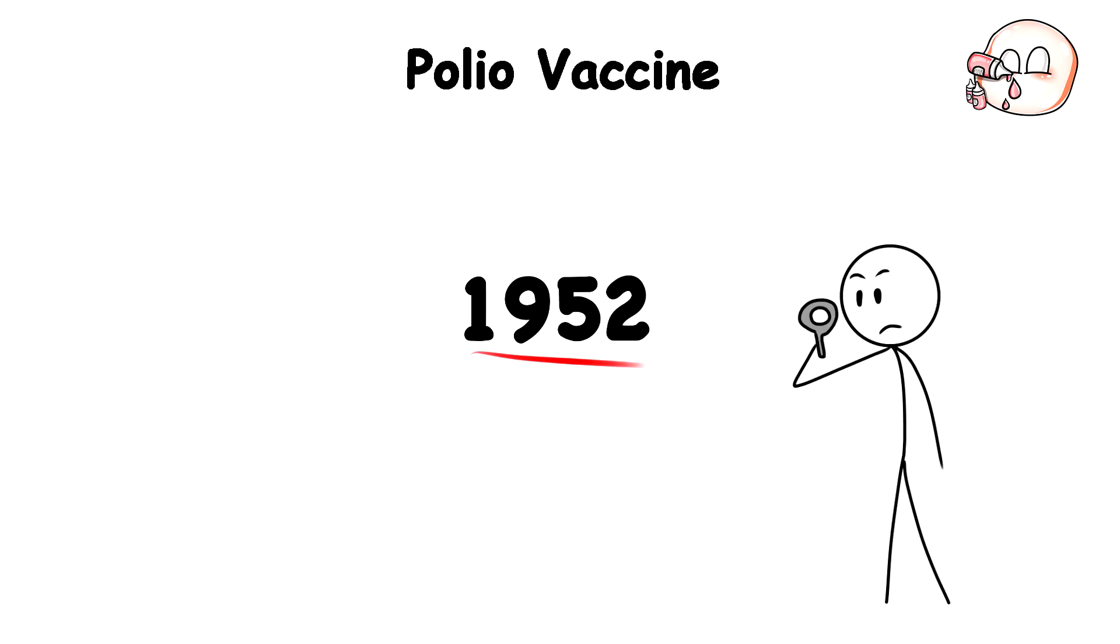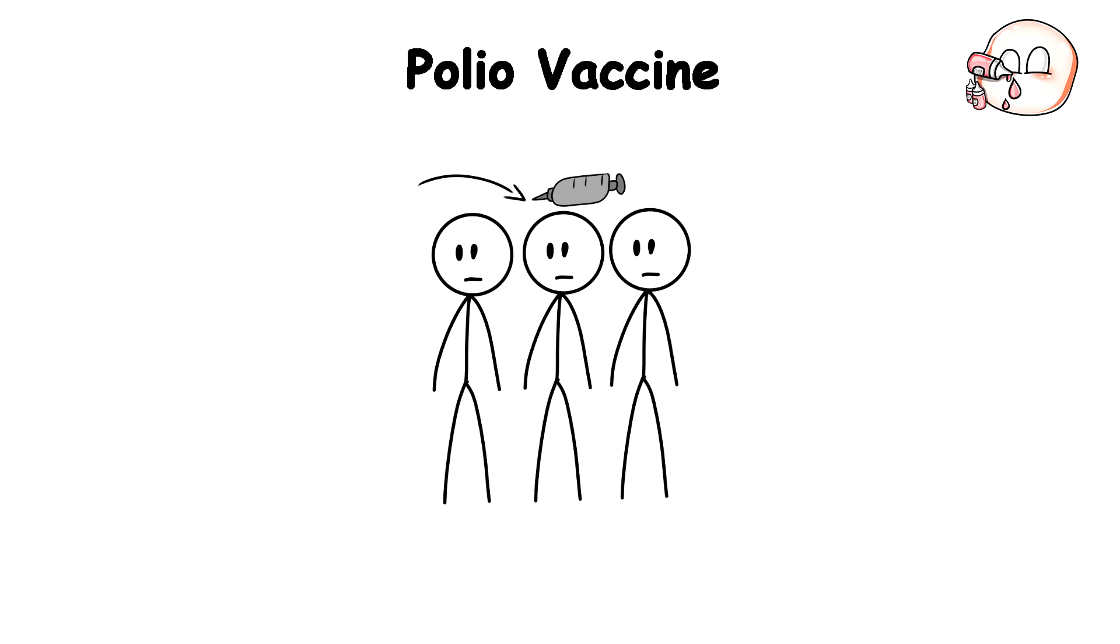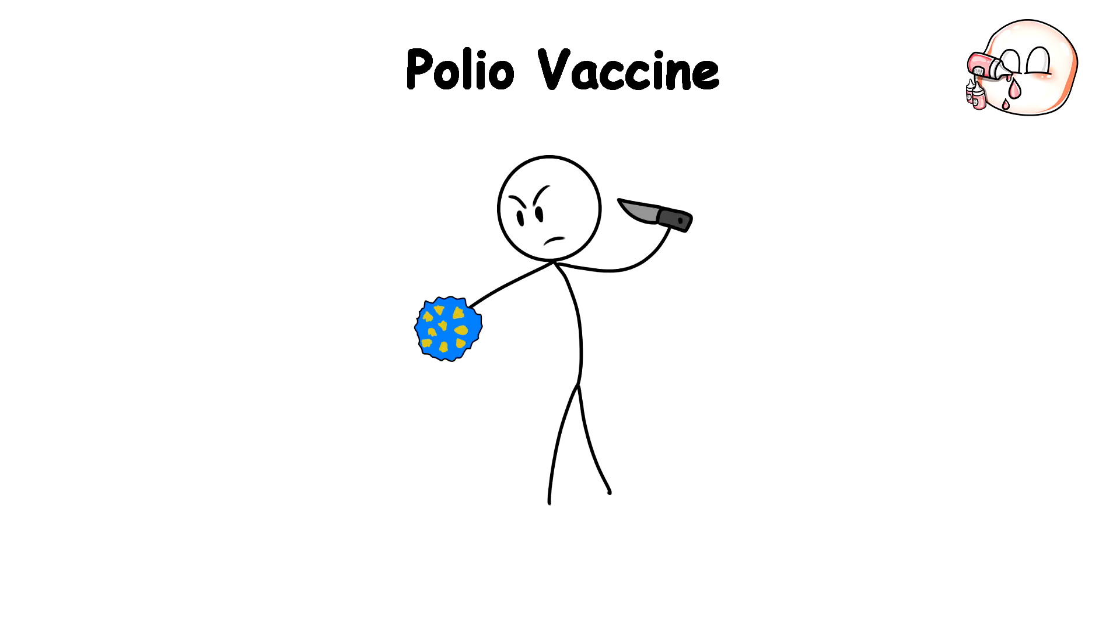Then, in 1952, a researcher at the University of Pittsburgh named Jonas Salk did what many people thought was impossible. After years of experimentation on killed polio virus samples, he successfully created a vaccine that could safely build immunity.